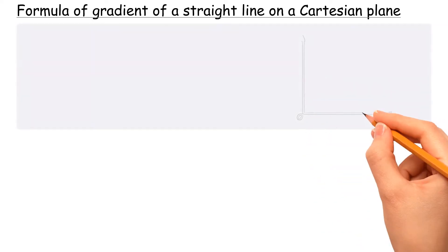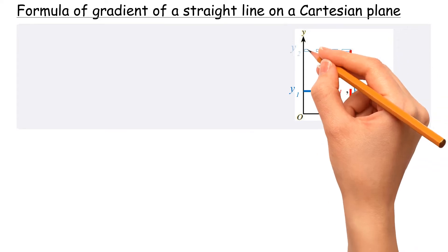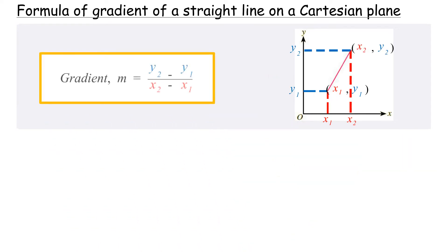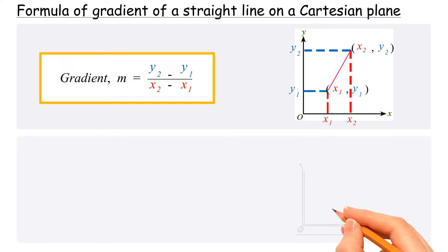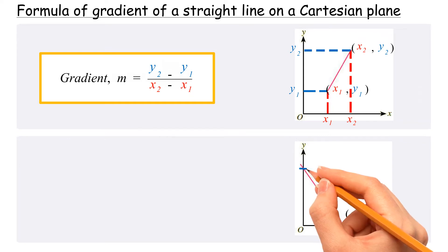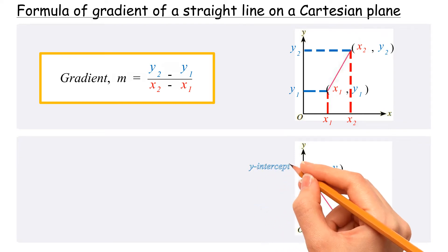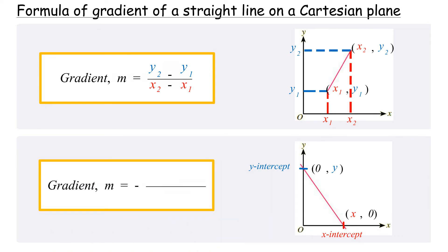Formula of Gradient of a Straight Line on a Cartesian Plane: In the Cartesian coordinate system, the gradient of a straight line that passes through two points can be calculated using the ratio between the vertical distance to the horizontal distance. The intersection point between the straight line and the x-axis is called the x-intercept, while the intersection point with the y-axis is called the y-intercept. The gradient equals negative y-intercept over x-intercept.